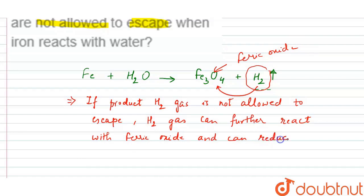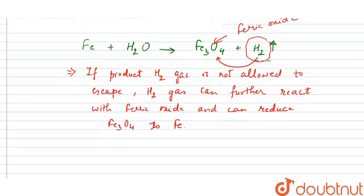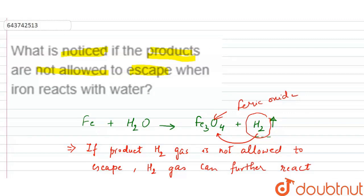So the products or the gases which are releasing in the system should be allowed to escape. If they are not allowed to escape, they can further react with the product which is undesirable.